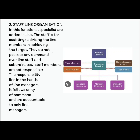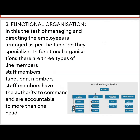Next is functional organization. In this, the task of managing and directing the employees is arranged as per the function they specialize in. In functional organization, there are three types of members: line members, staff members, and functional members. Staff members have the authority to command and are accountable to more than one superior. In the staff-line type there is no authority to command — they can only advise. But in functional organization, they have the authority to command.